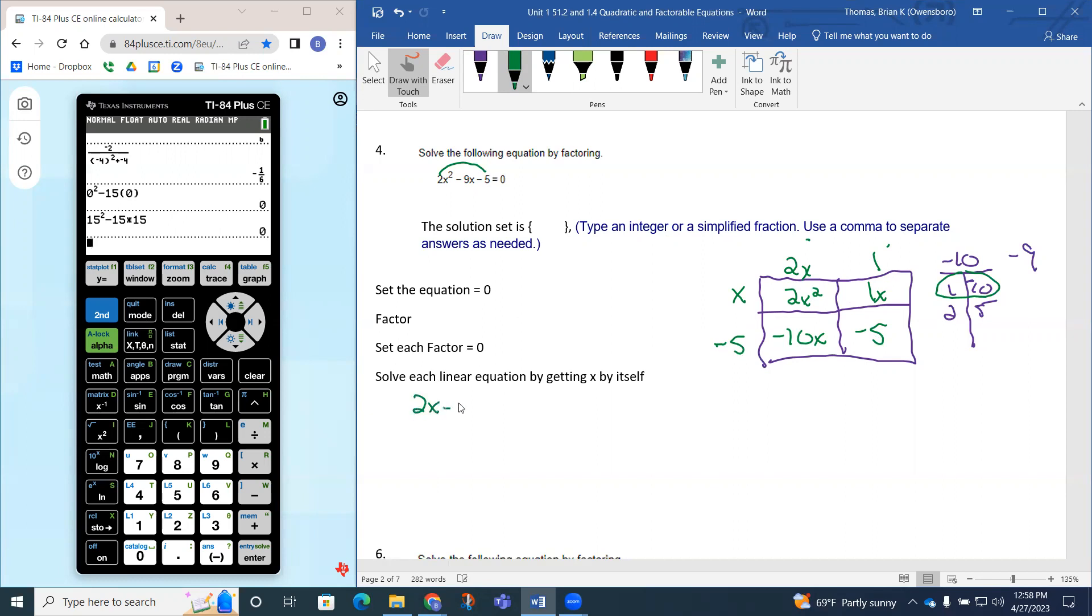This 2x squared minus 9x minus 5 equals 0 is going to turn into the factors (x minus 5) times (2x plus 1) equals 0.